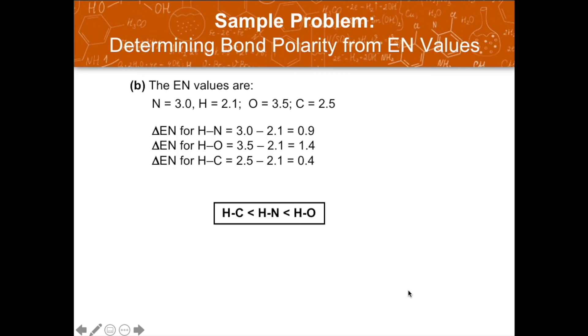For the second example, we compare the differences in electronegativity values to determine increasing polarity. The bond between C and H has a difference of 0.4, making it the least polar. The bond between hydrogen and oxygen is the most polar, with an electronegativity difference of 1.4. So the order of increasing polarity is: H–C, then H–N, then H–O. That's it for our second video in the Chemical Bonding Discussion Series. Thank you for listening.